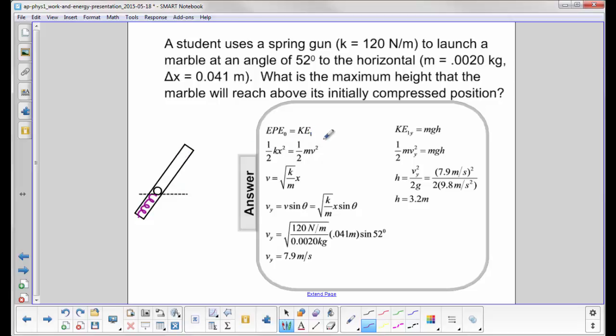We're trying to find the velocity of the marble when it leaves its compressed position. So we have one-half kx squared equals one-half mv squared. We solve for velocity, and we have this term here.